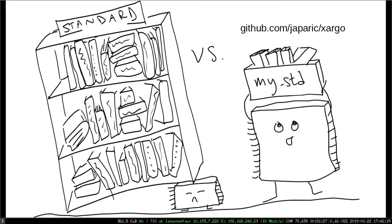If you're on a chip that's more powerful and you think it could run something kind of like the standard library but that won't work for some reason, you may find yourself wanting to make a custom standard library — this workflow is also supported. The tool you want in that case is called Xargo. It's like cargo but with an X instead of a C, for cross-compiling. Xargo's sysroot-building features may well have finished integrating into cargo by now, so check its wiki.